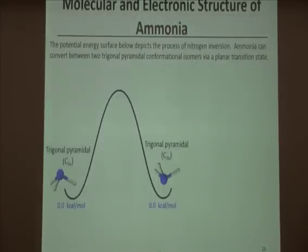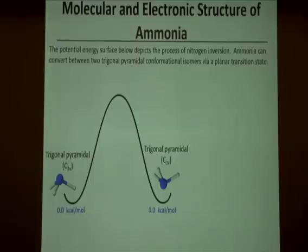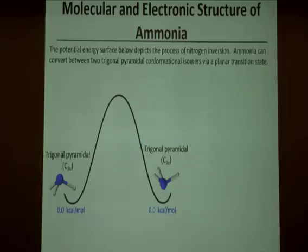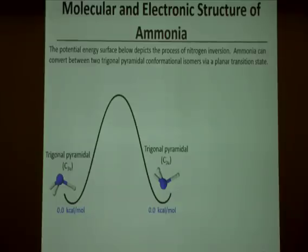I want to start by thinking about ammonia, which is probably the simplest nitrogen compound we can look at. It's an NH3 molecule with all single bonds from the nitrogen atom. VSEPR predicts that it will have a trigonal pyramidal C3V geometry, and it does — just like with hydronium. We can optimize that structure; at this point I'm assuming you feel reasonably comfortable with that.